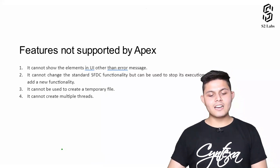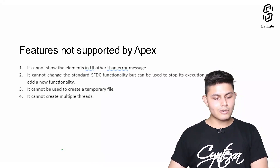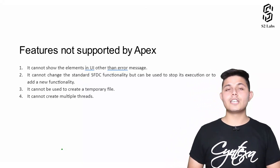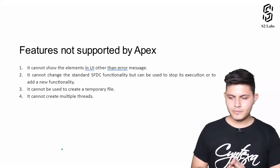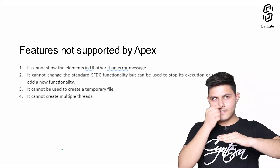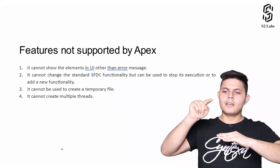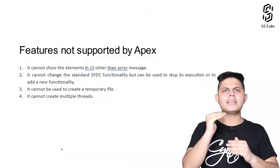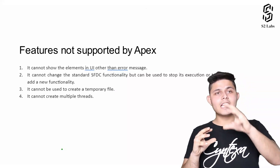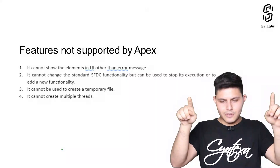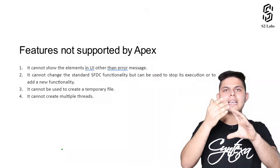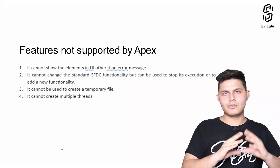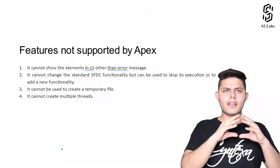Next, Apex cannot change the standard SFDC functionality, but it can be used to stop its execution or to add new functionality. This is a very important thing to understand. For example, whenever we create a new record in Salesforce and hit the Save button, there is a pre-built functionality where the data entered into that form gets saved into the database — that's a predefined functionality which Salesforce provides.